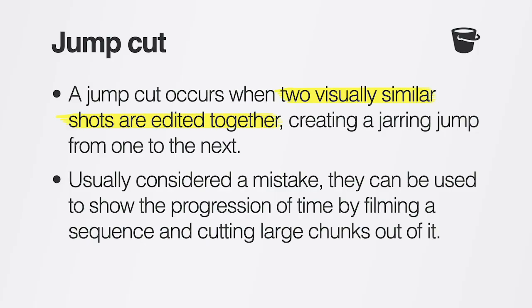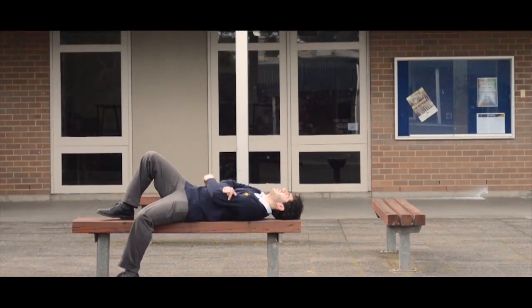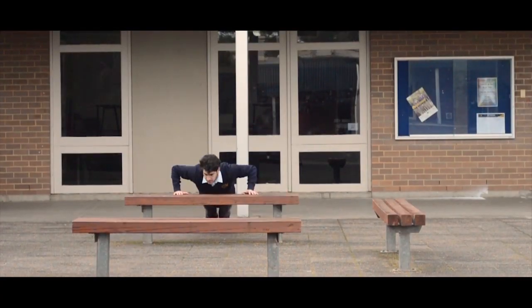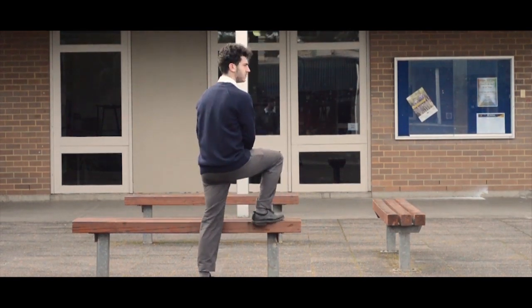A jump cut occurs when two visually similar shots are edited together, creating a jarring jump from one shot to the next. Although jump cuts are usually considered to be a mistake, they can be used to show the progression of time by filming a sequence and cutting huge chunks out of it.